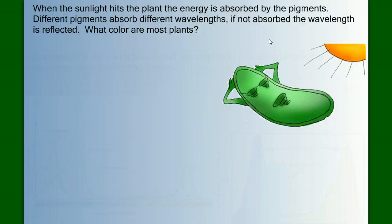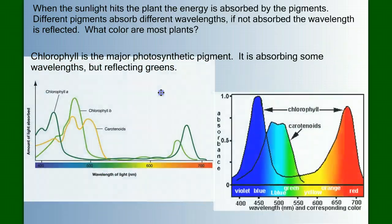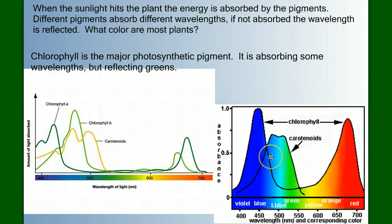When sunlight hits plants, the energy of light is absorbed by the different pigments in the plant. Different pigments will absorb different wavelengths of light — different energies of light. If not absorbed, the wavelength is reflected. What color are most plants? Green — because chlorophyll is the major photosynthetic pigment. It absorbs some wavelengths of light but reflects the green. These graphs show the different wavelengths absorbed by the major photopigments: chlorophyll A, chlorophyll B, and the carotenoids — the orange and yellow pigments. Chlorophyll absorbs the blues, violets, reds, and oranges, but reflects a lot of green. That's why plants look green.